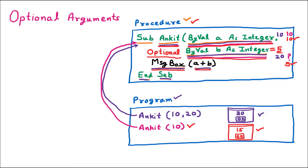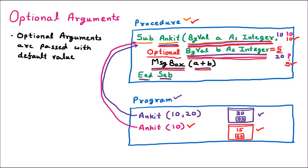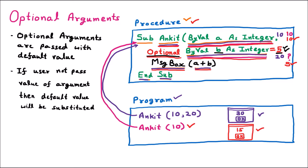Optional arguments are arguments which are optional and have a default value. Here, argument b is an optional argument because the Optional keyword is used and it has the default value of 5. Whenever the user does not provide the value of an optional argument, the default value is substituted. The first key point is that optional arguments have the Optional keyword before the argument. When an argument is optional, it is not required to pass its value — if you pass a value it will be taken, if you do not pass it, the default value will be taken. Now we will take a real-life program example to understand optional arguments further.